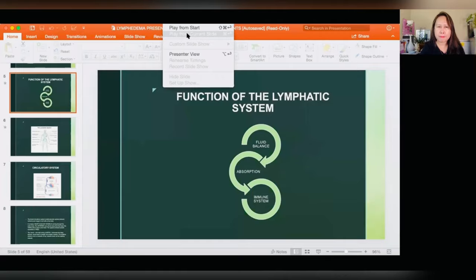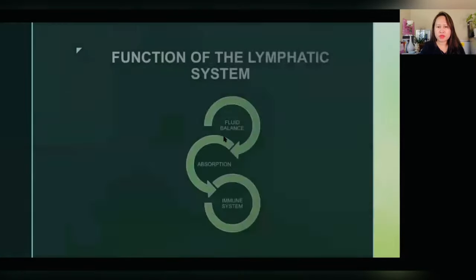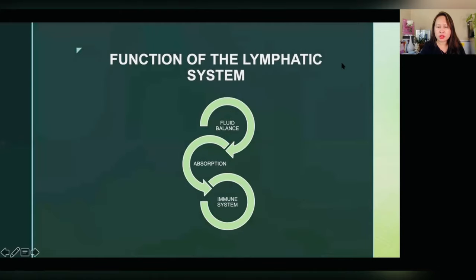The third main function of our lymphatic system is fluid balance. It helps maintain fluid balance in the body by collecting excess fluid and waste products from the tissues and depositing them into the bloodstream, where they go through circulation and are taken out through the excretory system. So those are the three main functions: it functions as an immune system, for absorption, and for fluid balance.